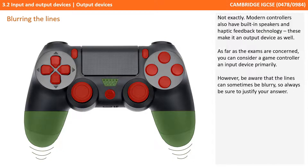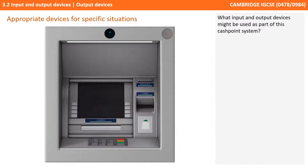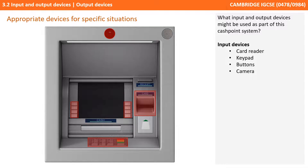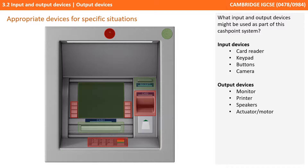A more useful skill, having now learned about a range of typical input and output devices, is to be able to justify appropriate devices for a specific situation. Here we see a CachePoint machine. What input and output devices might be used as part of this CachePoint system? We could argue there's a card reader, a keypad, various buttons, and also a security camera at the top — all input devices. There are also some output devices: a monitor, a printer to print a receipt, a speaker in the right-hand corner, and there must be some form of actuator or motor that helps to dispense the cash.